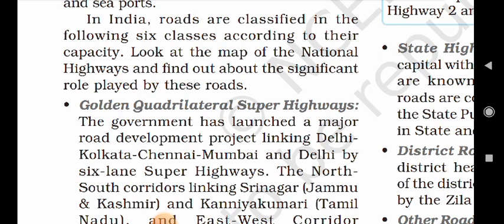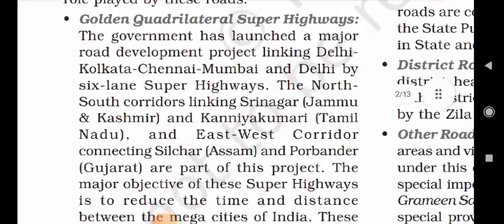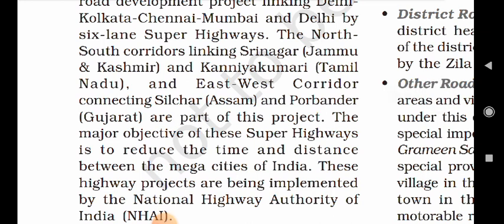Look at the map of the national highways and find out about the significant role played by these roads. No. 1: Golden Quadrilateral Superhighways. The government has launched a major road development project linking Delhi, Kolkata, Chennai, Mumbai and Delhi by six-lane superhighways.